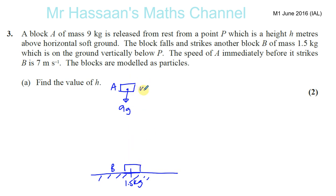So basically what's happened is it's fallen down. It starts off at rest, it ends up going at 7 meters per second. It's falling under gravitational force, so that's G here. Find the value of H. So let's use SUVAT here.